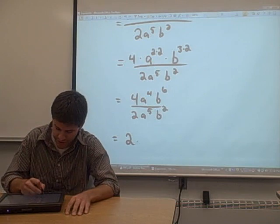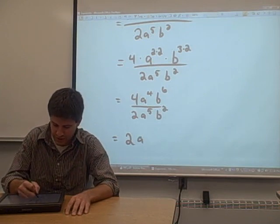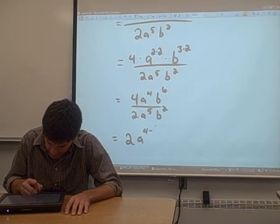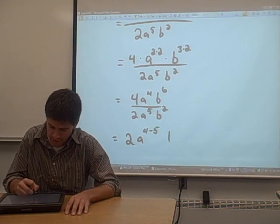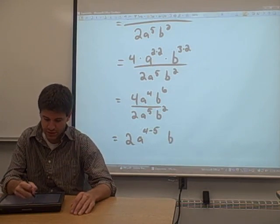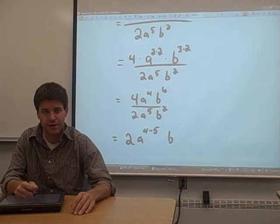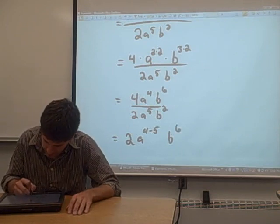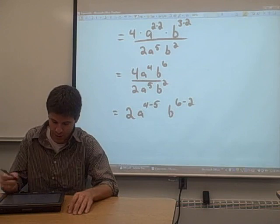We take the a terms. We're going to have a to the numerator power minus the denominator power, 4 minus 5 power. Now if we look at the b terms, in the numerator there's a 6th power, in the denominator there's a 2nd power. So we get b to the 6 minus 2 power.